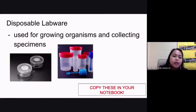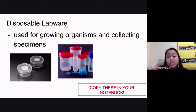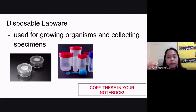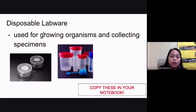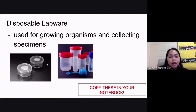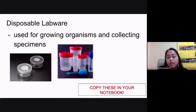Disposable labwares are used for growing organisms and for collecting specimens. So you have your specimen cups — these are things that you use just once, because of course we call them disposable labwares. Those collecting cups that you use to collect your urine, to collect your blood samples — these are disposable labwares. We only use them once, then we dispose of them. Another example would be your petri dishes, the things that you use whenever you'd be growing microbia or bacteria in the lab.